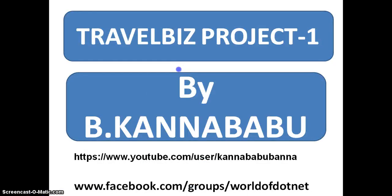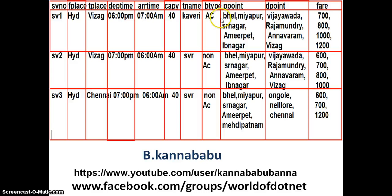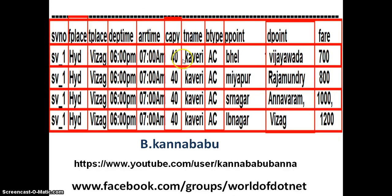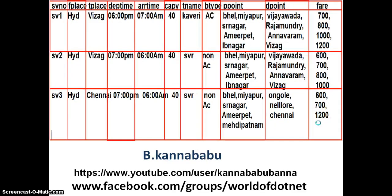A table is said to be in First Normal Form if it obeys two rules. Rule one: single cell consists of single value. The intersection of row and column is called a cell. Here, I divided a cell that had five comma-separated values into separate rows so that single cell consists of single value. Rule two: each record must be unique — no two records must have the same values. After applying First Normal Form, if two records are the same, we delete one. Now this table is perfectly in First Normal Form according to Codd's rules.